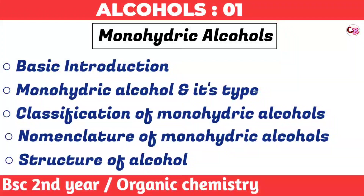Hello guys, welcome to ChemBoost again. Today we will start our first chapter of BSc second year organic chemistry, which is alcohols. In this lecture we will classify monohydric alcohols — primary, secondary and tertiary alcohols. Then we will see nomenclature of alcohols: common system, carbinol system and IUPAC system, with some examples. Then we will see the structure of alcohol. It's going to be a very knowledgeable lecture — let's start.